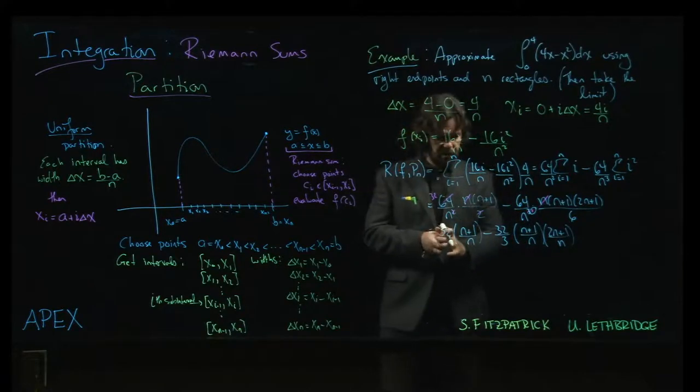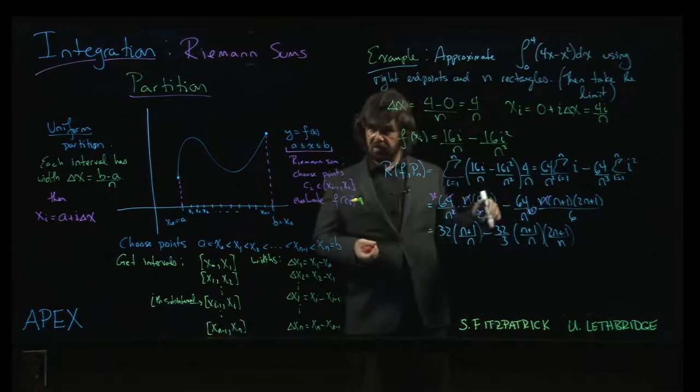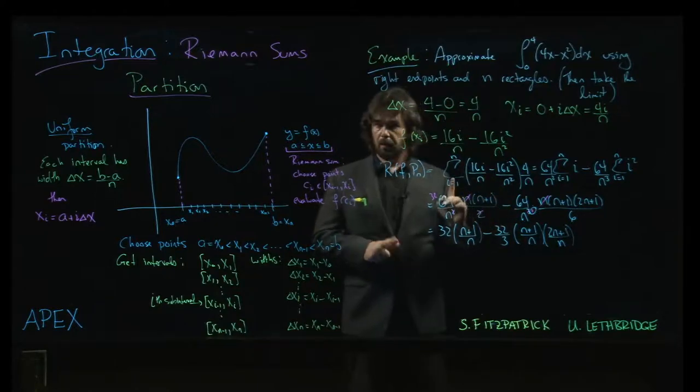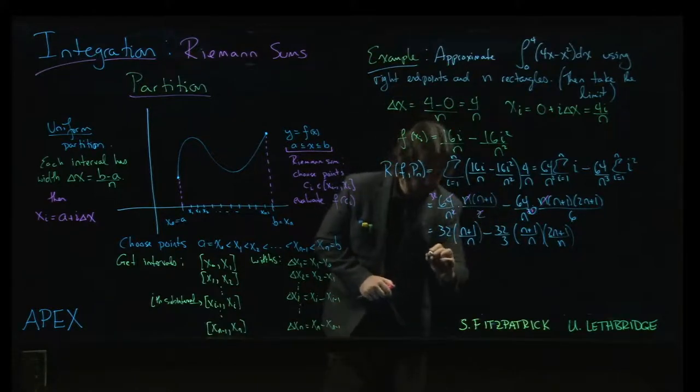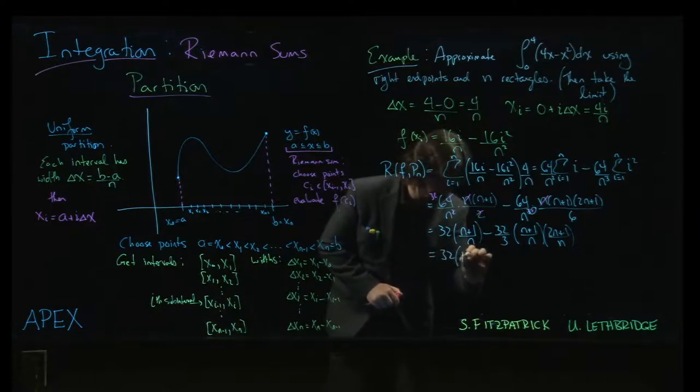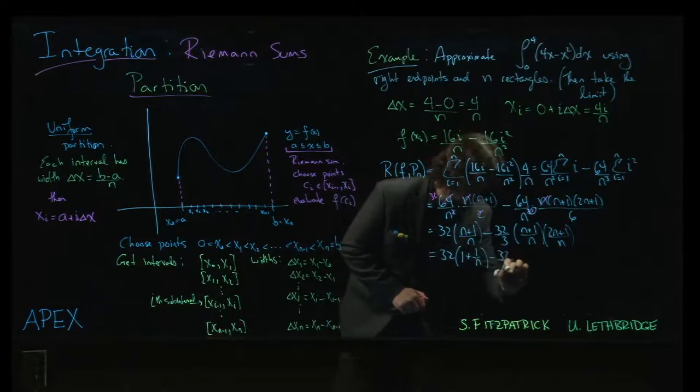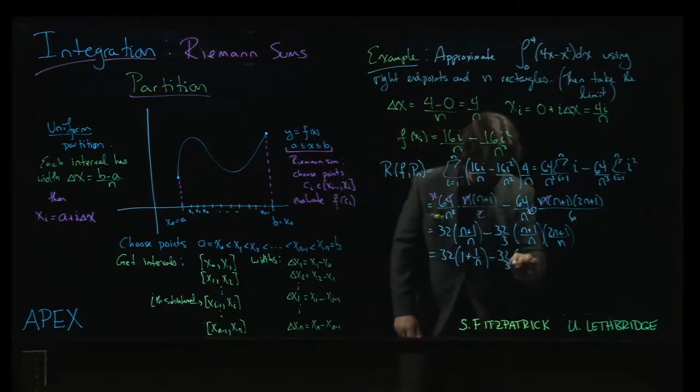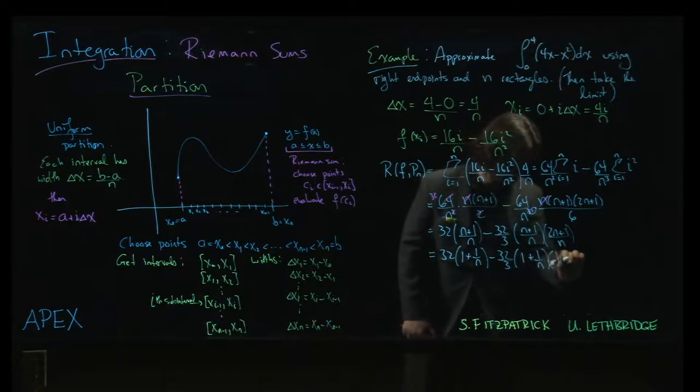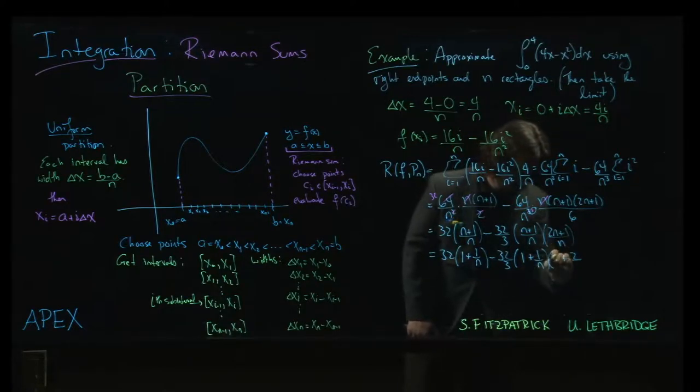So there's the result in general. If I was going to plug in 16 rectangles or a thousand, I could plug it into there. Let me do one more step. 32 times 1 plus 1 over n minus 32 over 3 times 1 plus 1 over n times 2 plus 1 over n.